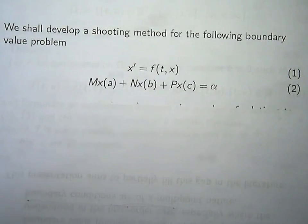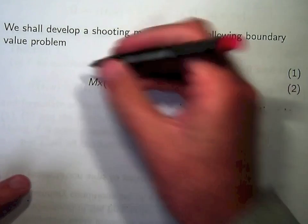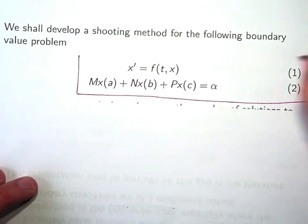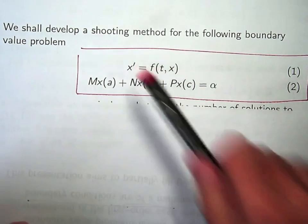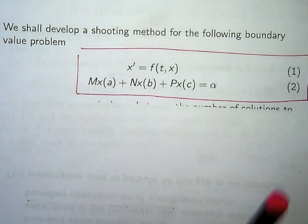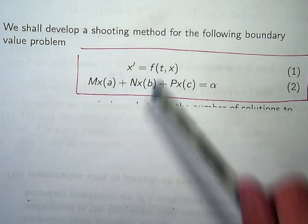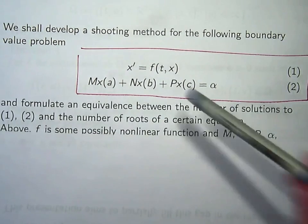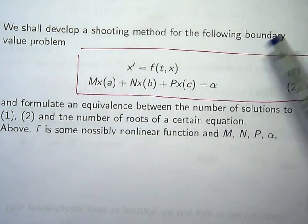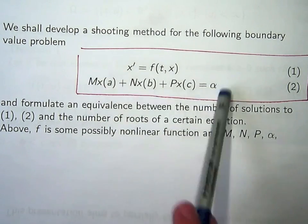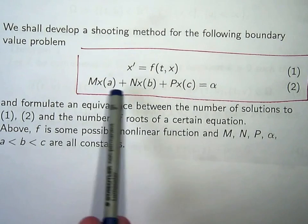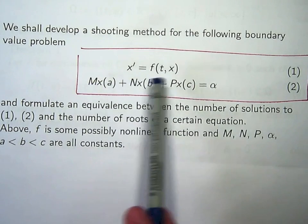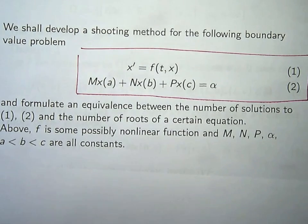So the problem under consideration is the following. By the dash here I just mean the regular ordinary derivative with respect to the independent variable, in this case t. So we've got a first order differential equation, f is some known function, it could be non-linear, it's a function of t and x. Here we've got the three point boundary conditions. So a, b and c are our three points, m, n and p are constants and alpha is a constant as well.